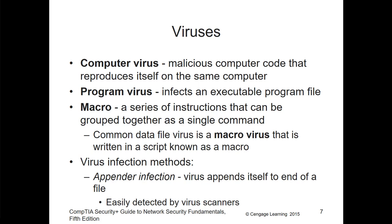Viruses can have different types. You can have a computer virus, which is malicious computer code. You can have a program virus, which infects an executable like a rootkit. You can have a macro — a series of instructions grouped together so that when you run it, it executes the sequence of commands. A common data file virus is a macro virus written in a script, and once run, it runs that script.